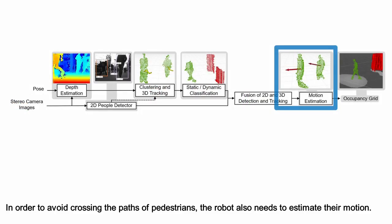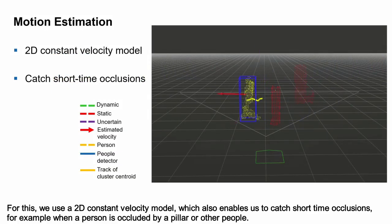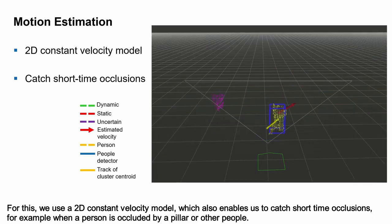In order to avoid crossing the paths of pedestrians, the robot also needs to estimate their motion. For this, we use a 2D constant velocity model which also enables us to catch short-time occlusions, for example, when a person is occluded by a pillar or other peak.